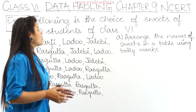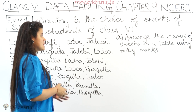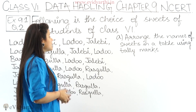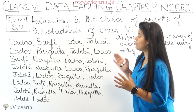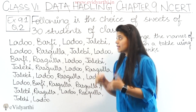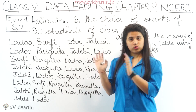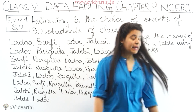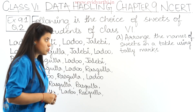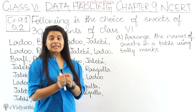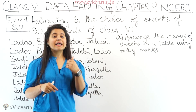In this question we have: following is the choice of sweets of 30 students of class 6. The sweets given are laddoo, barfi, jalebi, and rasgulla. We need to find how many children like laddoo, barfi, and so on. We need to arrange the names of sweets in a table using tally marks.